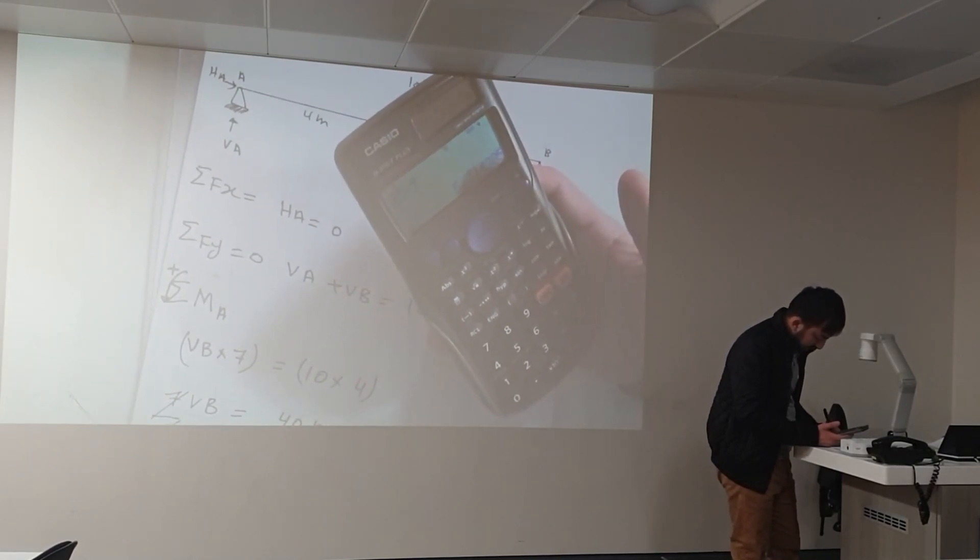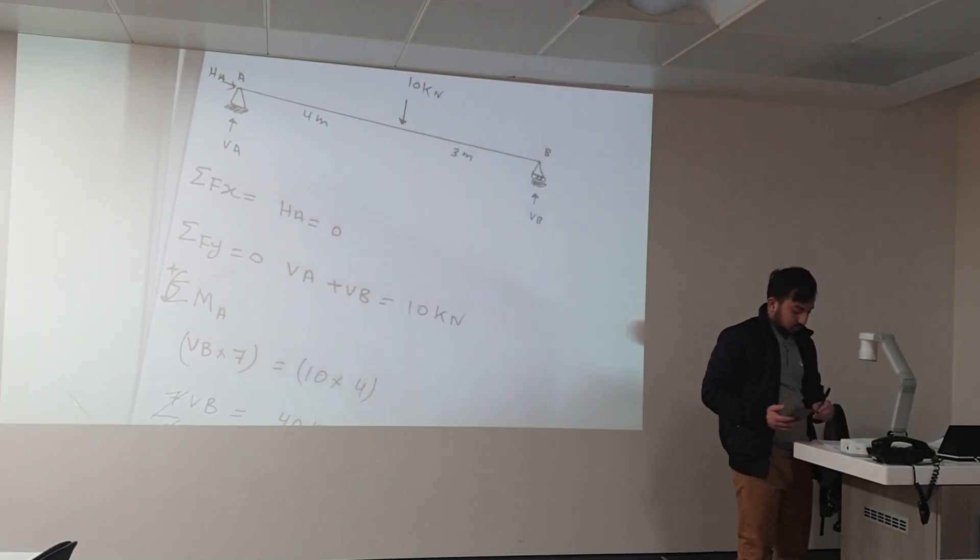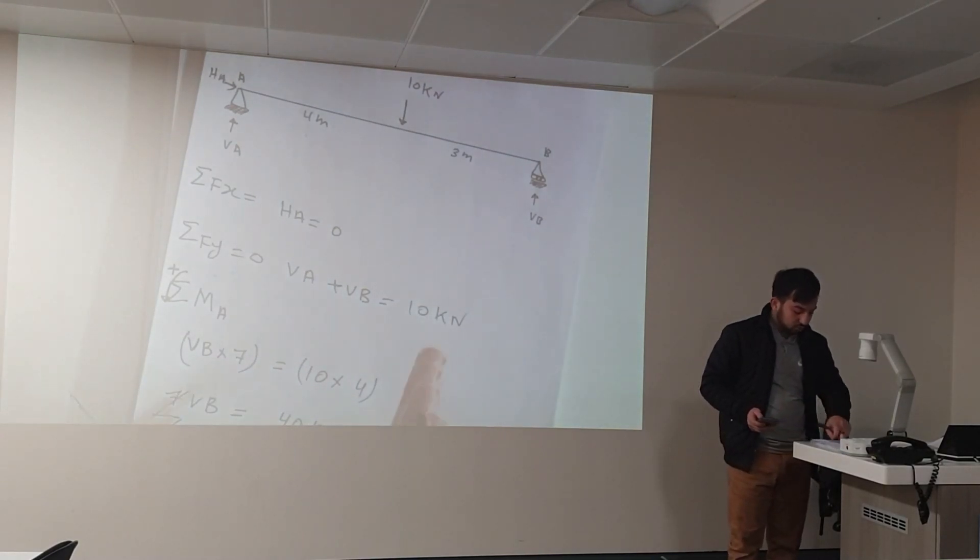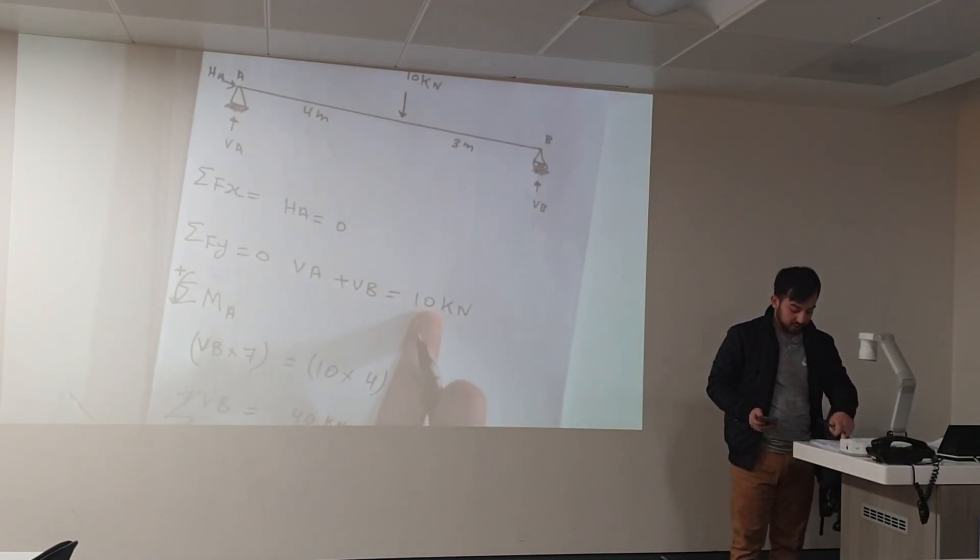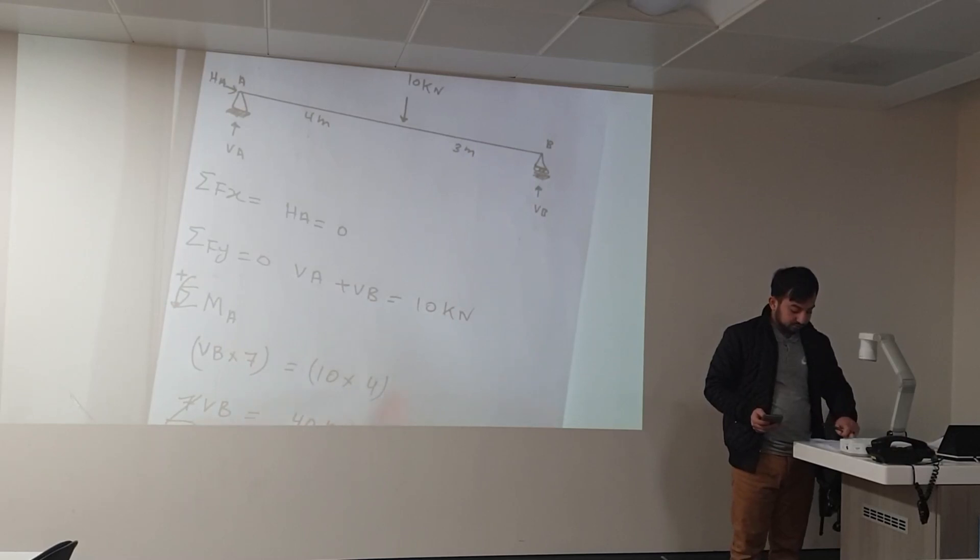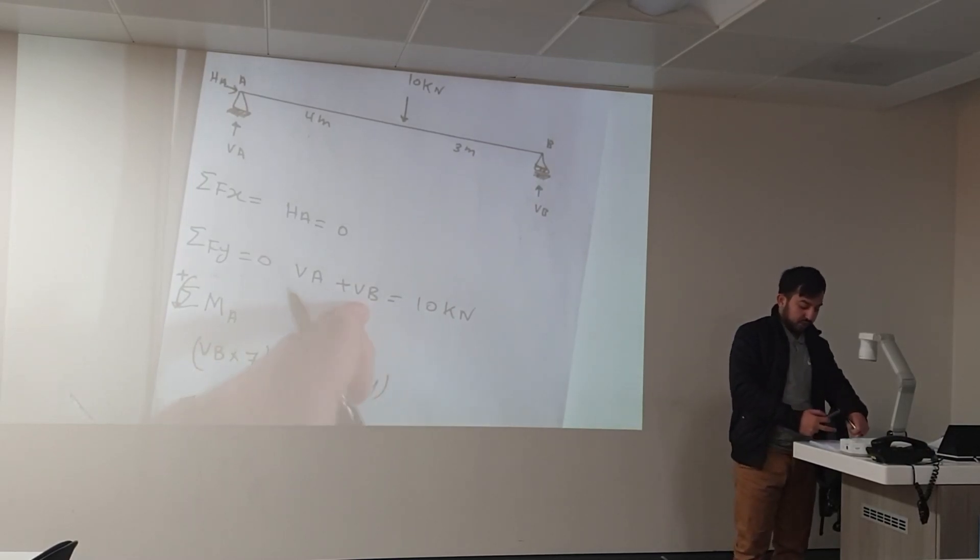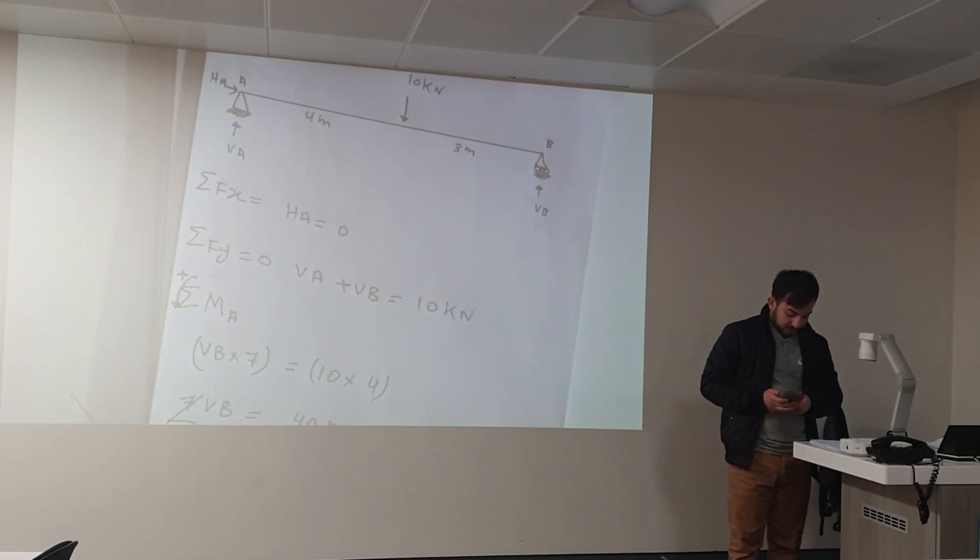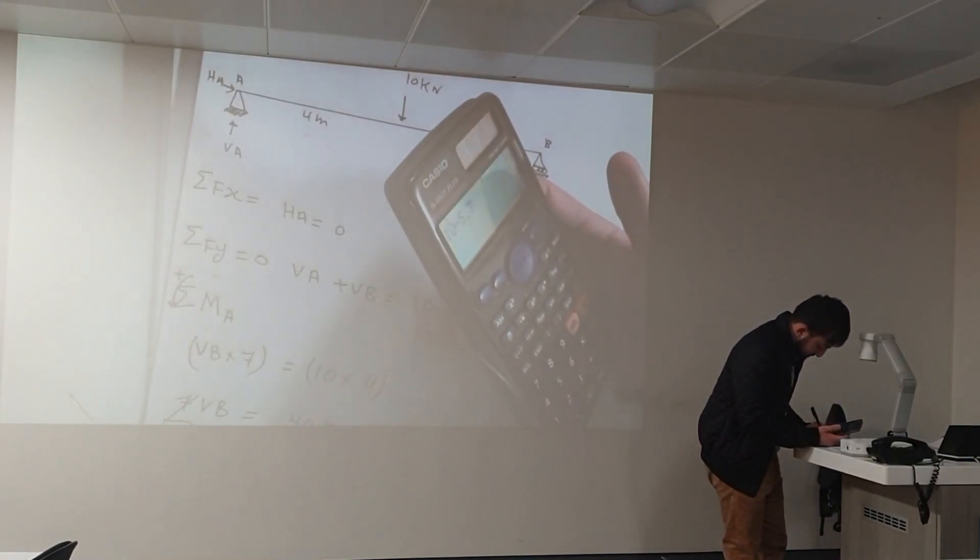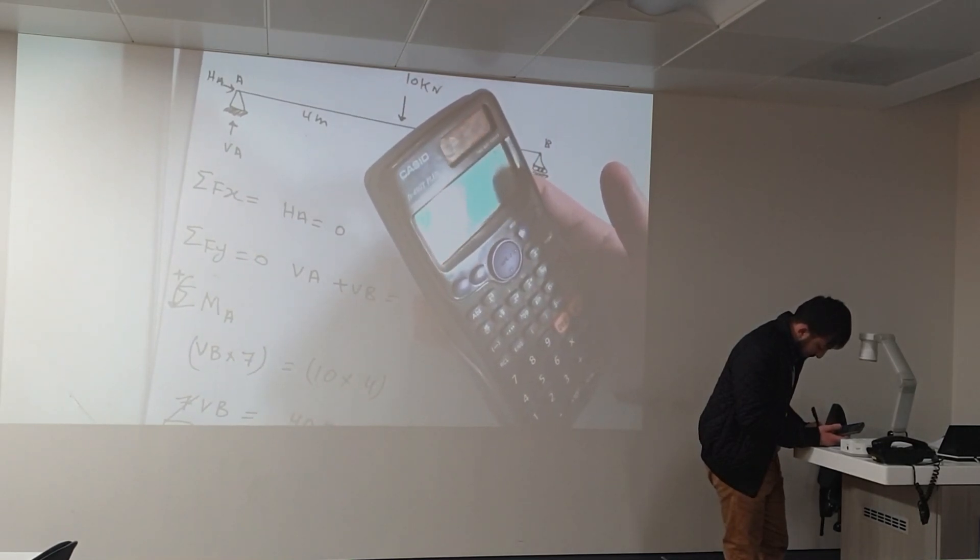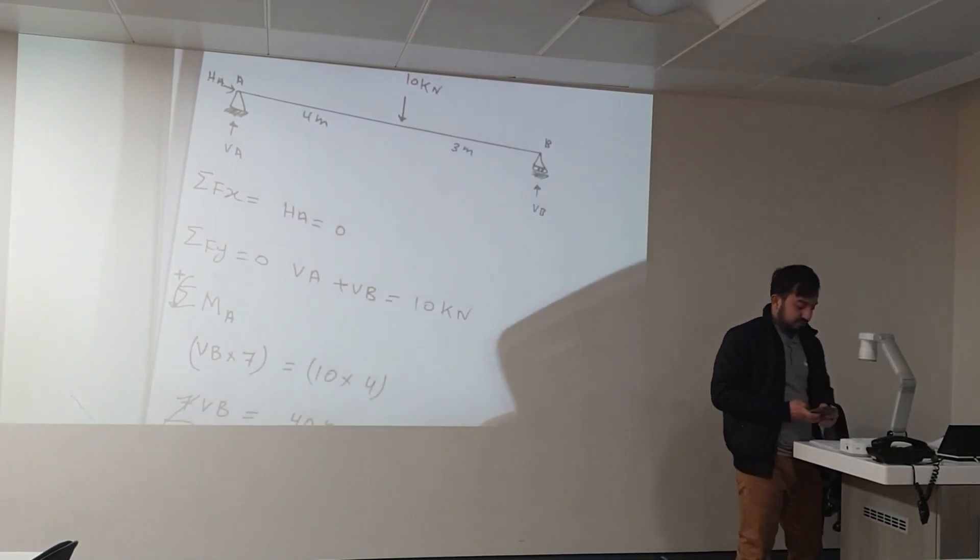And what's VA? We know VA plus VB equals 10. So instead of VB we put the value, we can find the value of VA. So VA will be 10 minus 5.7, which gives us 4.3 kilonewtons. Very simple.